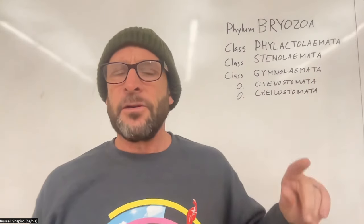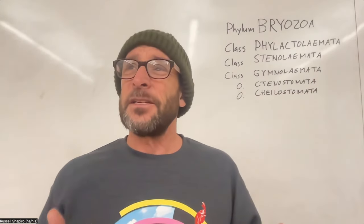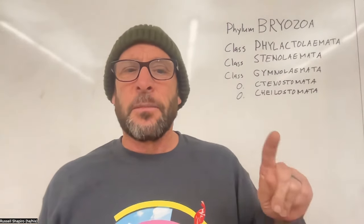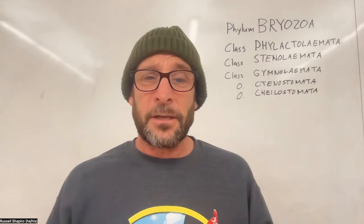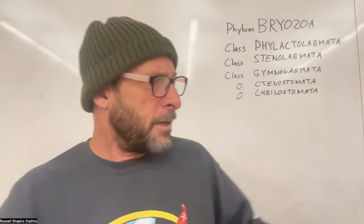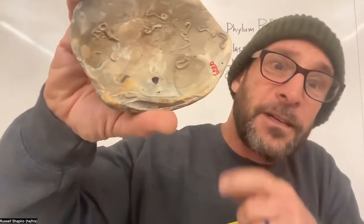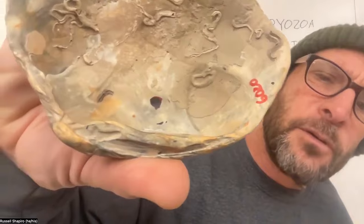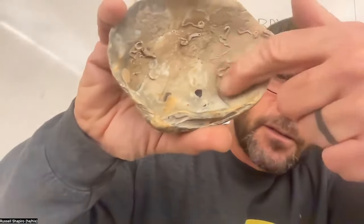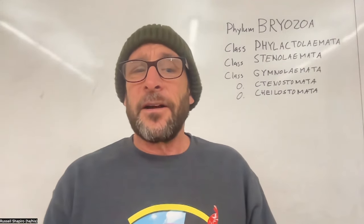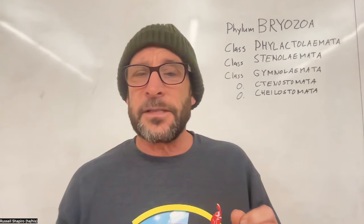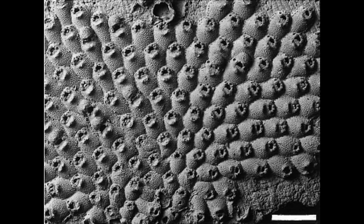Let's finish up with the Gymnolaemata - two major orders. The Ctenostomata don't calcify and don't have a good fossil record. But the Cheilostomata have a great fossil record and are what you find on beaches today if you're walking around - typically these encrusting forms. How to tell them apart? Their zoecia are box-like versus the round ones more typical of other bryozoans. And when you look at Cheilostomata under a scanning electron microscope, you see just amazing, really gorgeous structures.